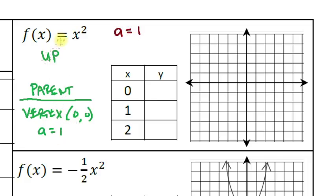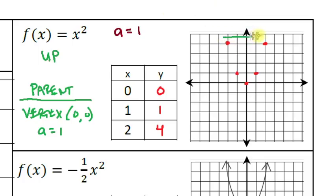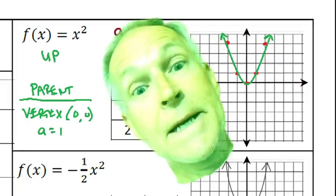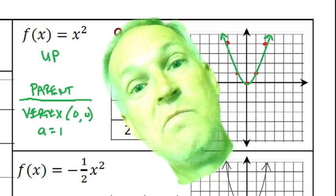When you plug in values: zero squared is 0, one squared is 1, two squared is 4. So our points are (0,0), (1,1), and (2,4). We don't need to plot the negative-x points separately because the axis of symmetry tells us those are reflections of the right-side points. We can reflect those across and draw the parabola. That's our parent graph: a equals 1, vertex at (0,0).